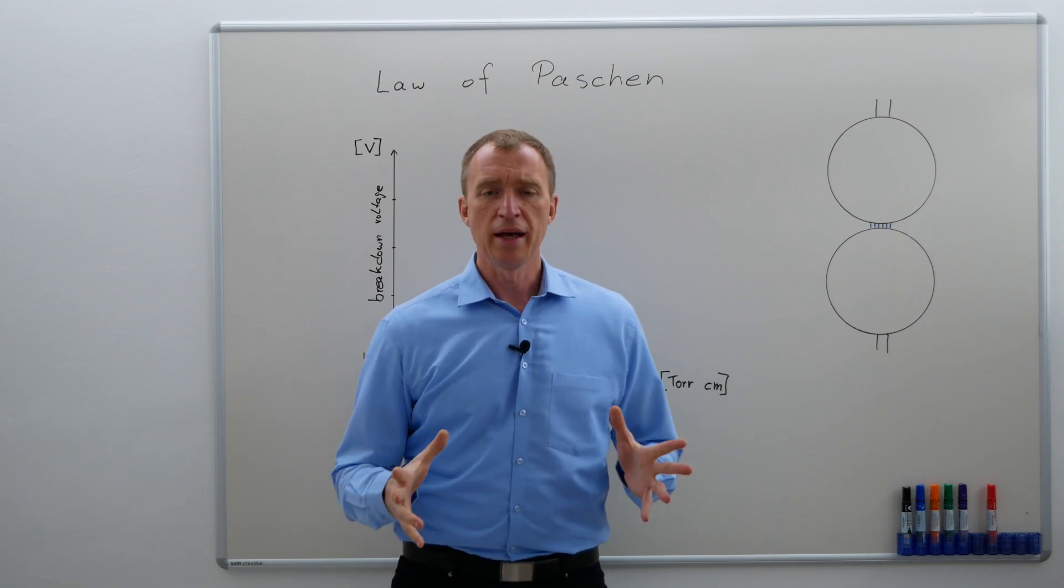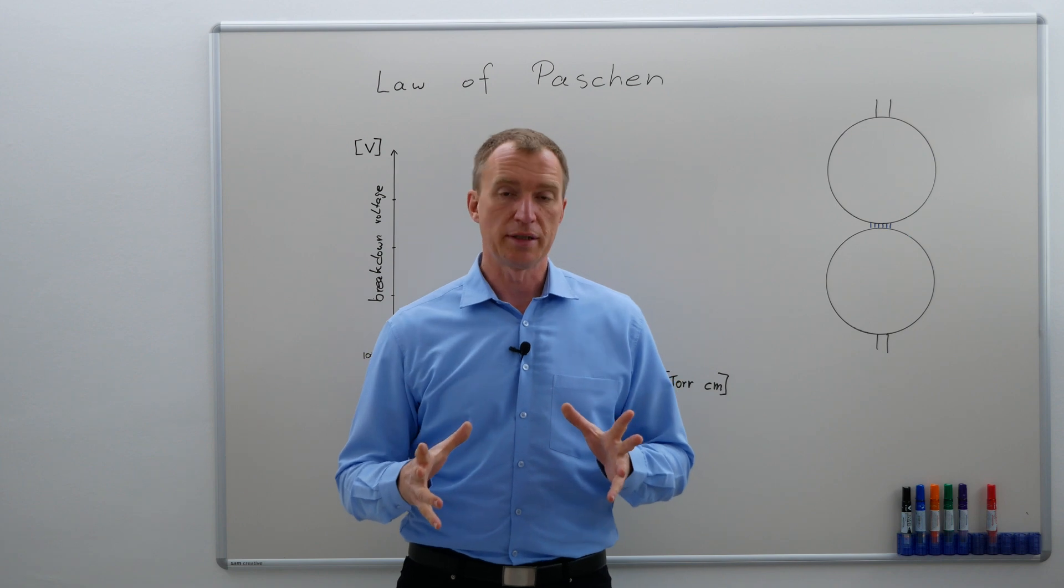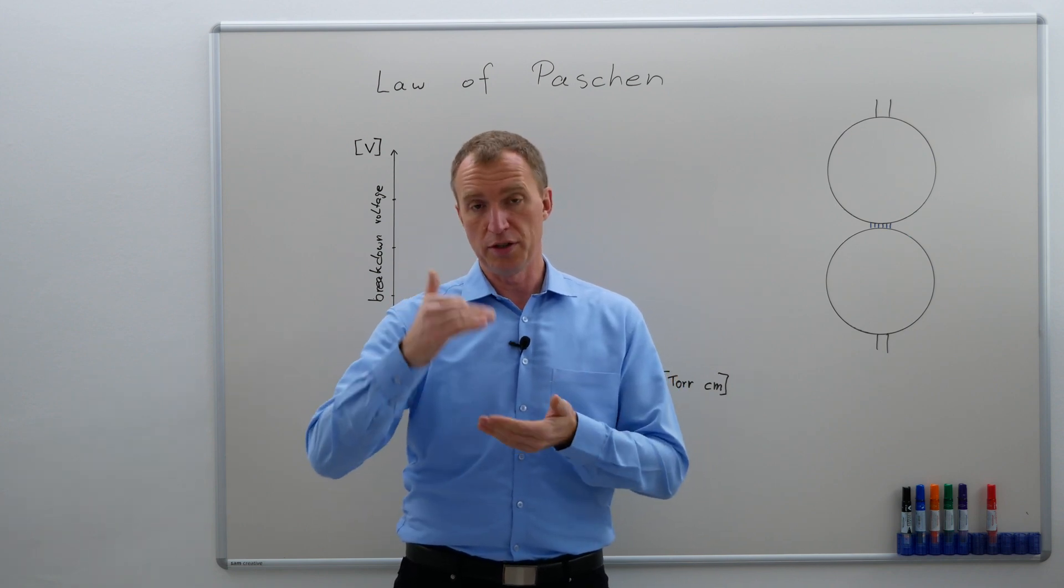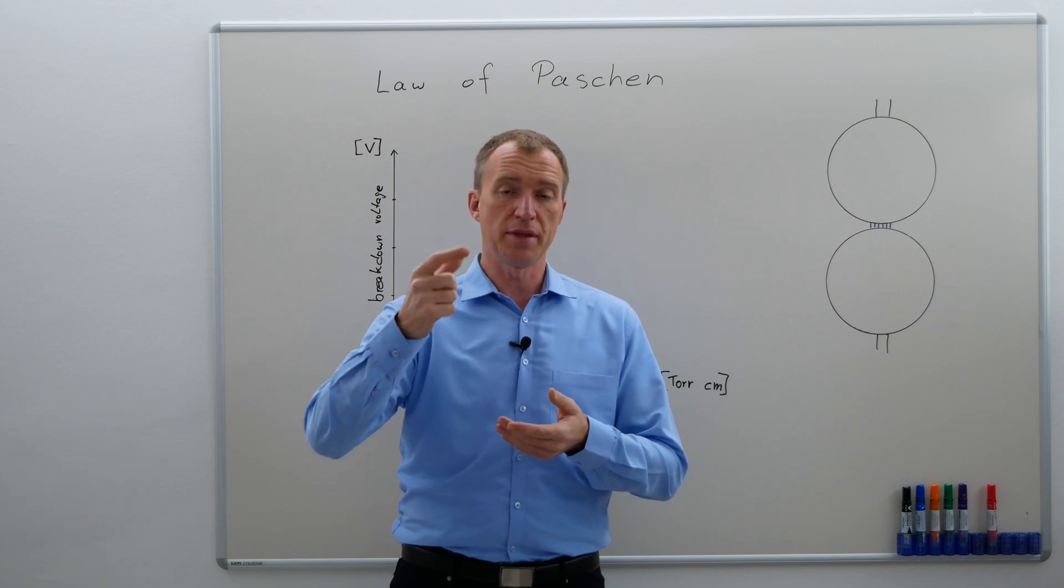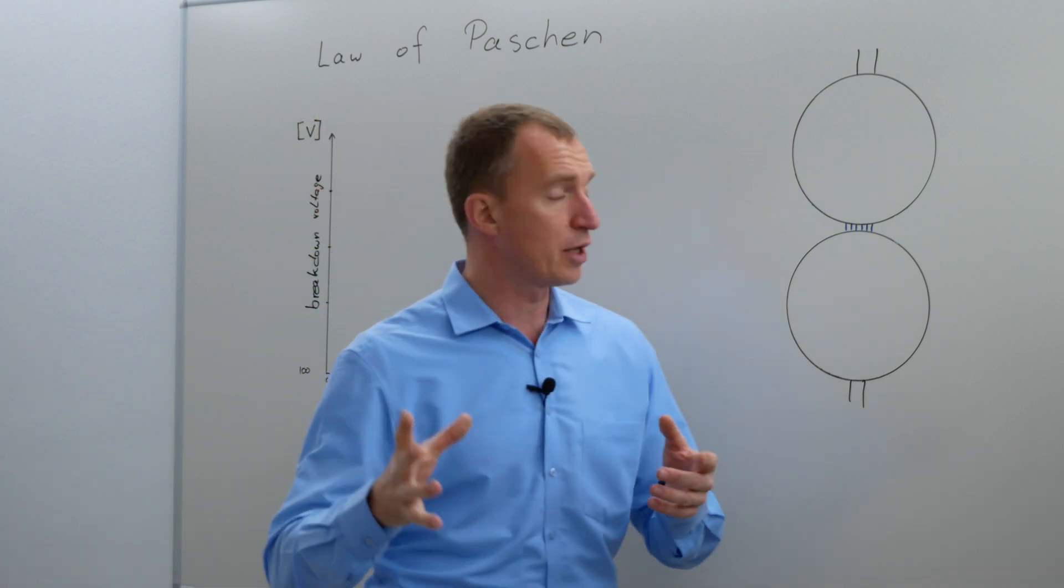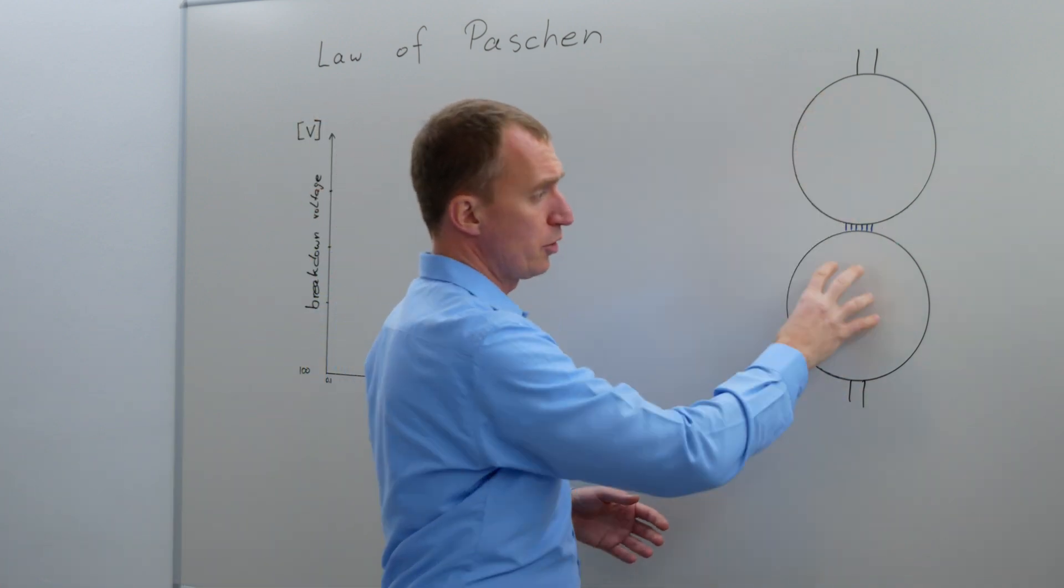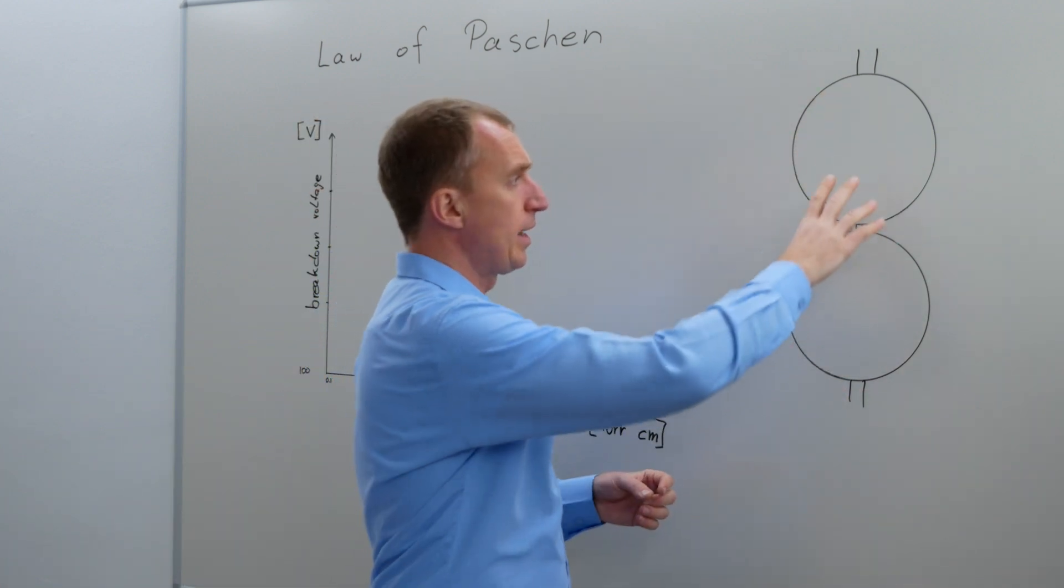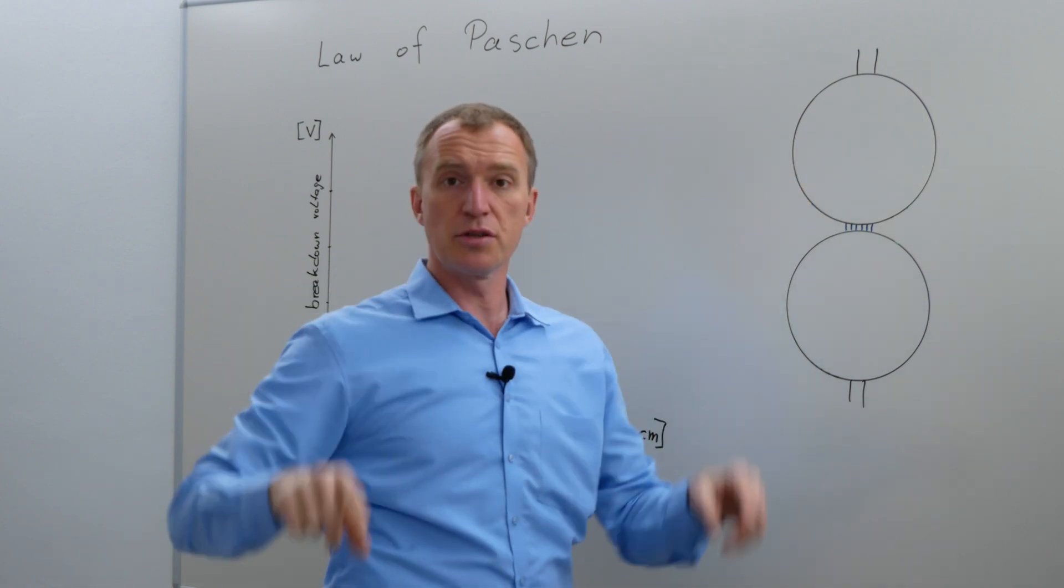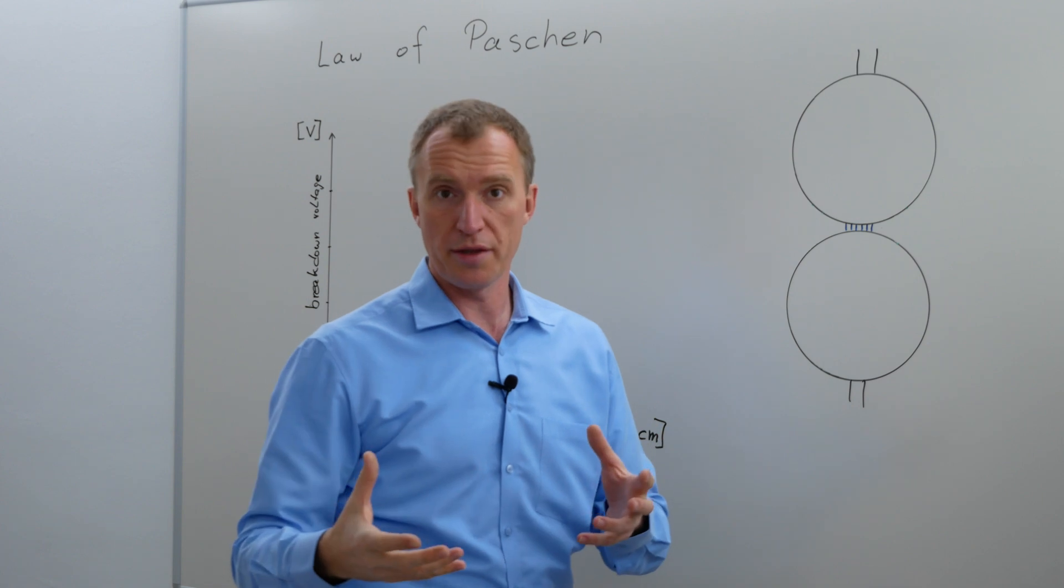He worked in Germany and made a very interesting experiment. He tried to find out the breakdown voltage between two electrodes based on the distance and the pressure. Paschen took two round electrodes and was able to change the distance. They were in an enclosure so he was able to regulate the pressure as well.